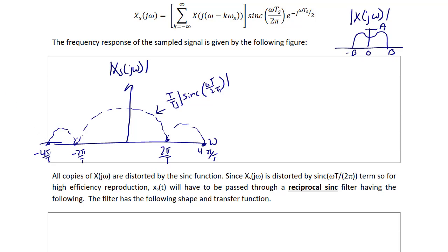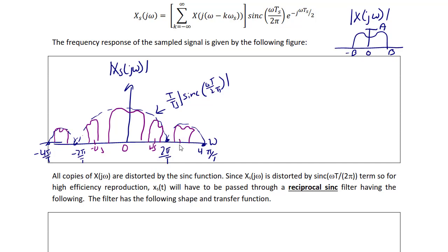Here is the key difference. Unlike the pulse sampler, the samples are now actually distorted by the sinc. For example, at ω equals zero the copy follows along the sinc envelope, and at ωS that sample is also distorted by the sinc. The same applies at negative ωS, at 2·ωS, and at negative 2·ωS. This describes the full sample and hold circuit behavior.